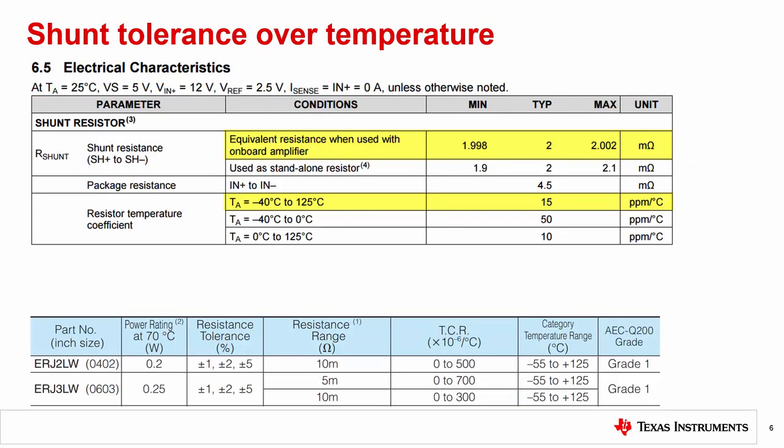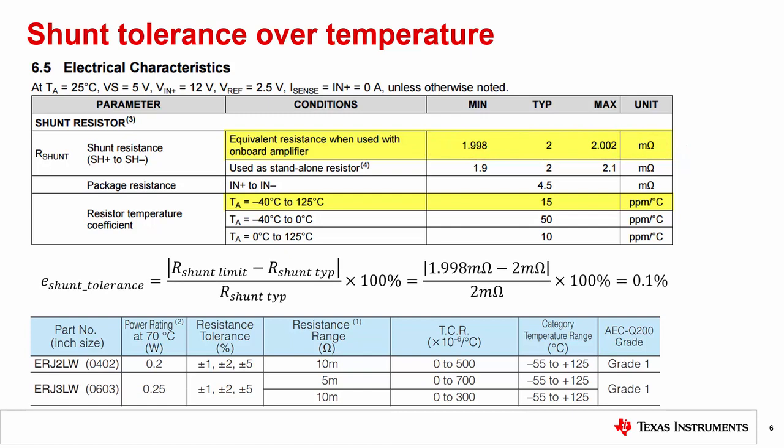As we stated before, the shunt resistor tolerance will not typically be found in our current shunt monitor data sheets, as most current shunt monitors do not include an internal shunt. However, there are a few devices that do feature an internal shunt. One device in particular is the INA250, shown in the upper table. In this table, we see that the INA250 internal shunt can range from 1.9998 milliohms to 2.002 milliohms. To get the shunt tolerance in percent form, we would simply take the absolute value of the typical, subtracted from either the min or max. We would then take the quotient of that value, divided by the typical. Lastly, we would multiply by 100% to get the percent value.